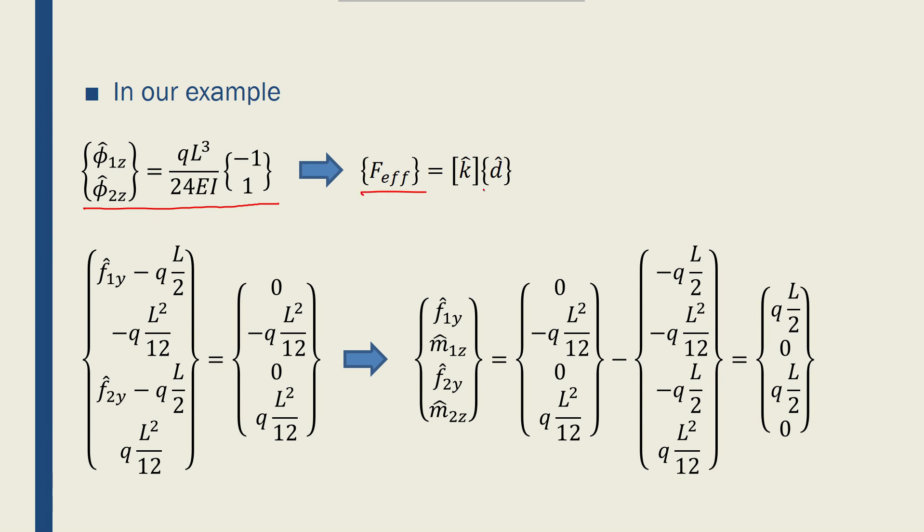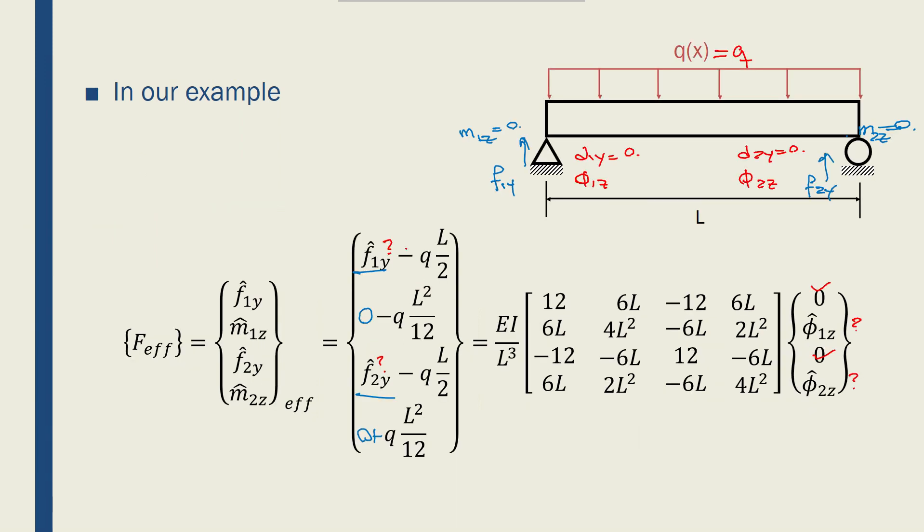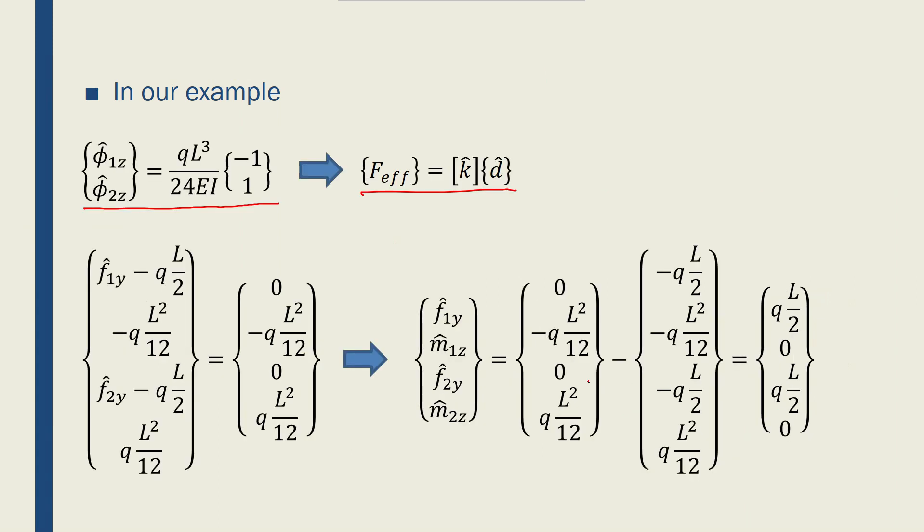Which I could insert into this equation again here. So this portion becomes equal to this matrix times this vector for which all of the elements are known now. If I do that, I will end up with this equation.